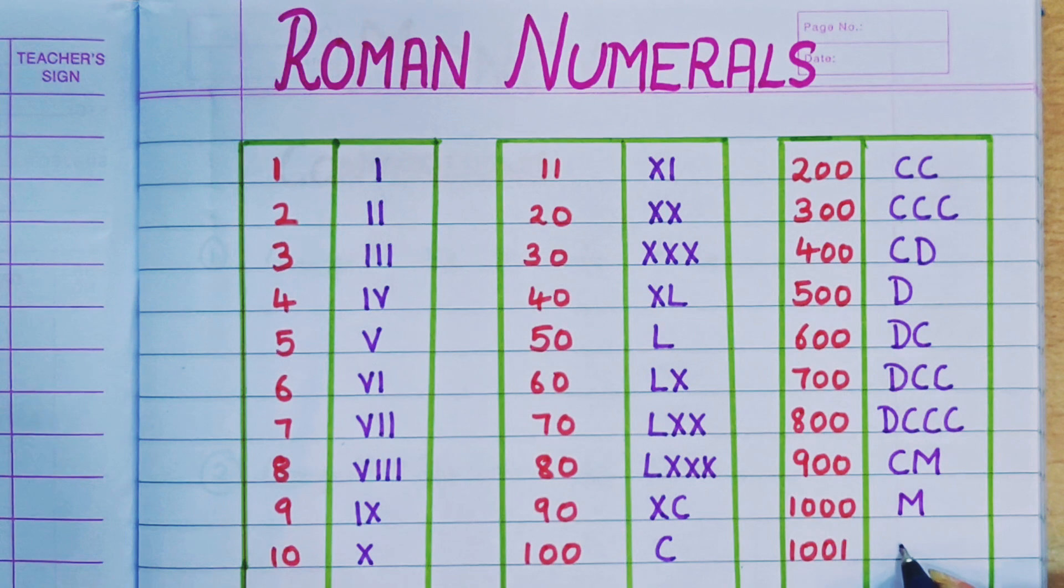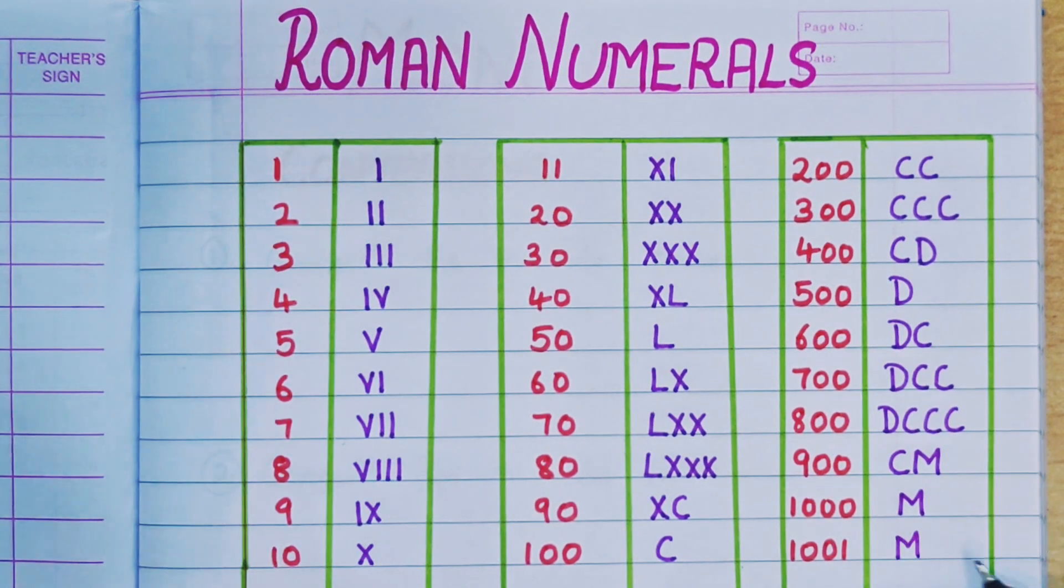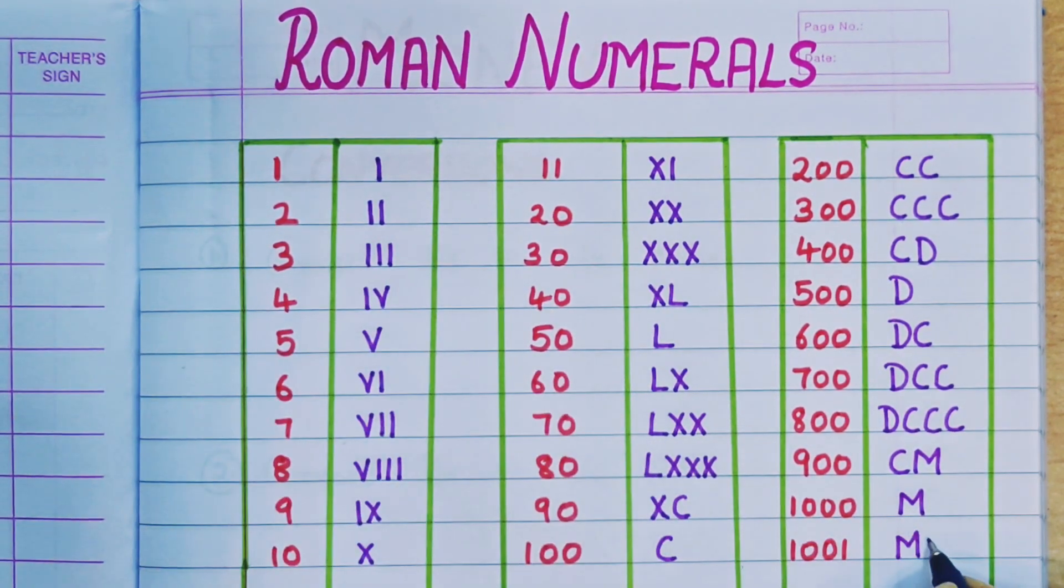So 1001 will be M and 1 we are adding so I.